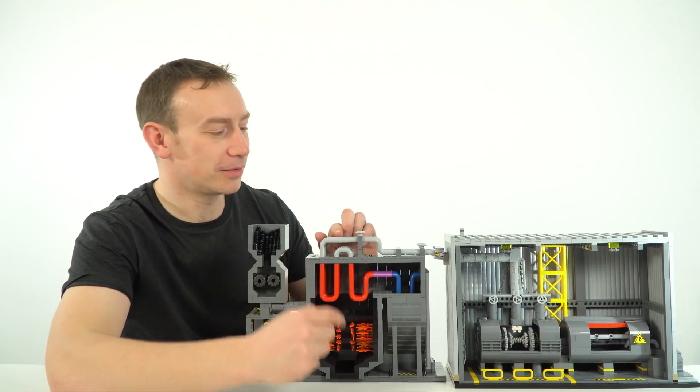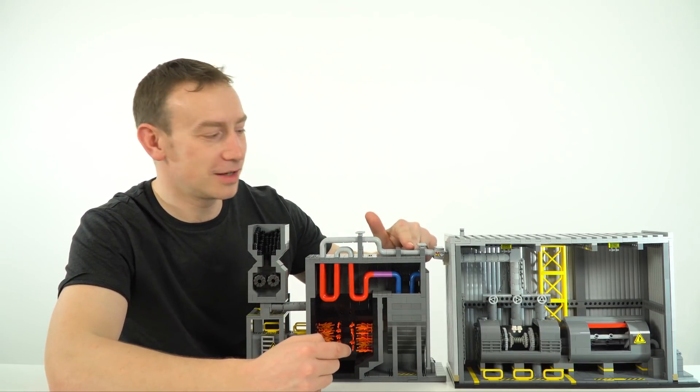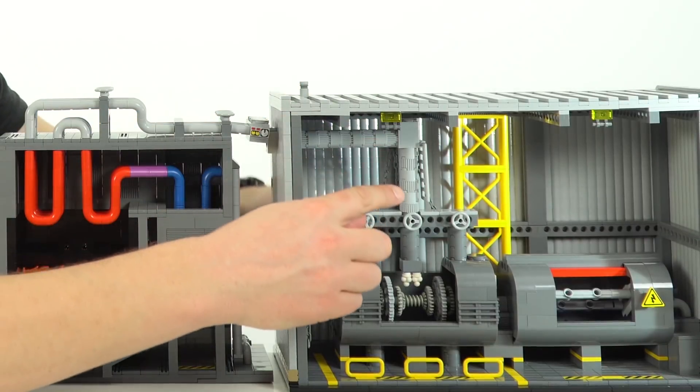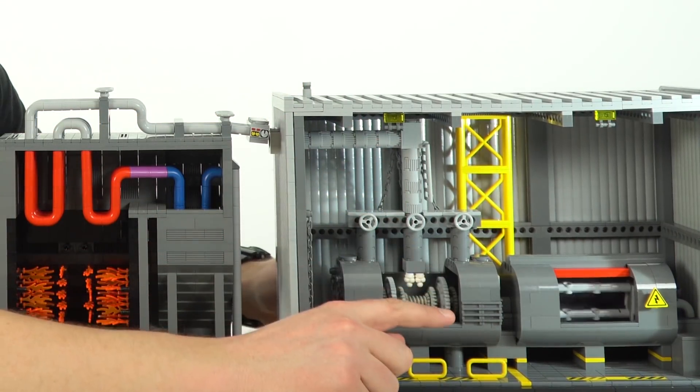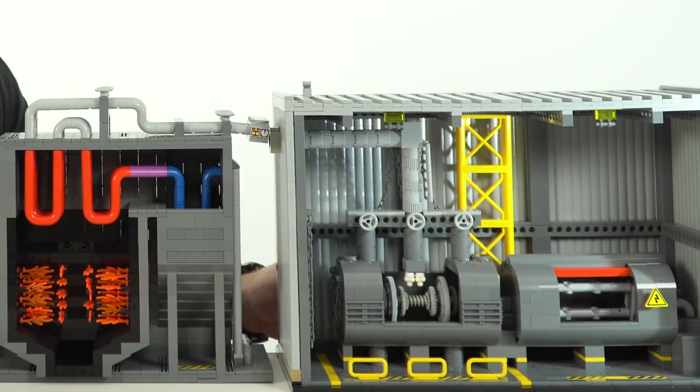This hot water when it's turned to steam goes along through this part here into a steam turbine which starts turning, and that turbine at the end causes a generator to turn which generates electricity.